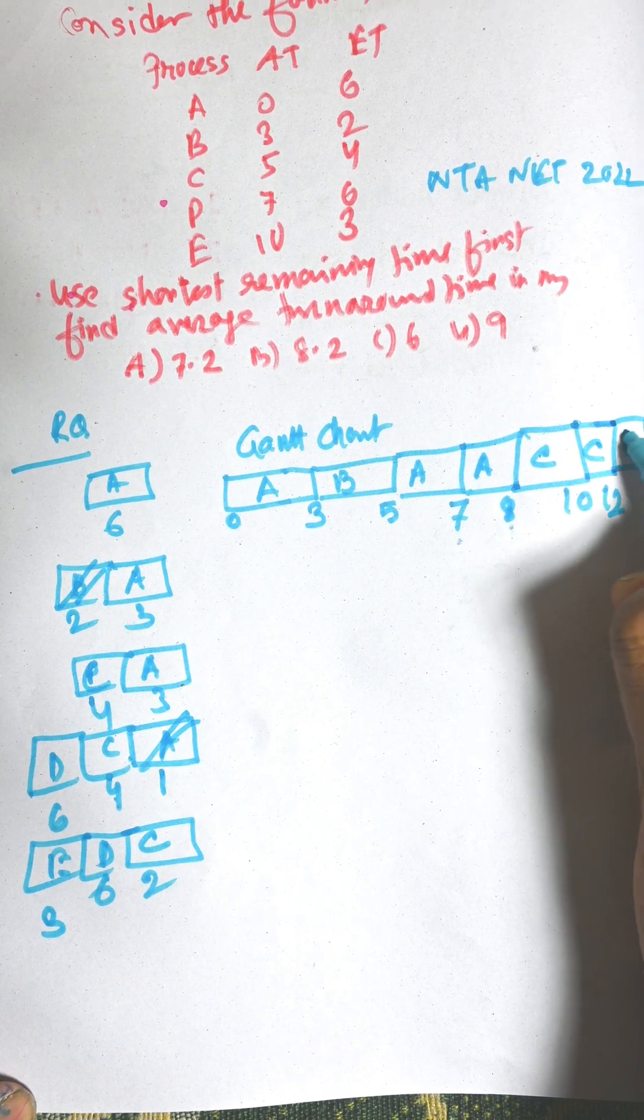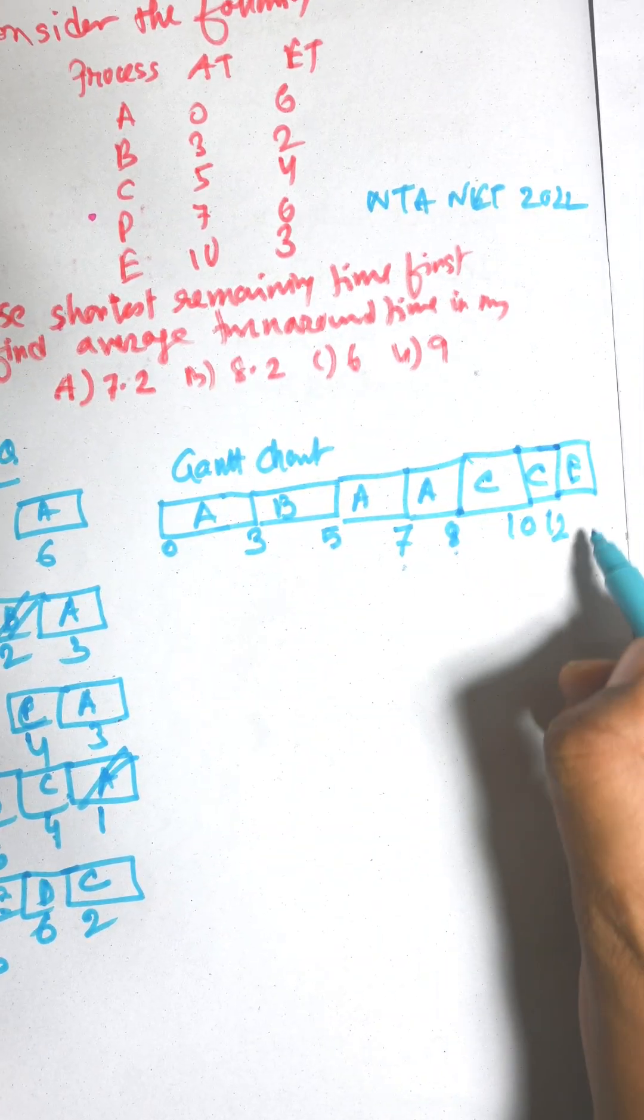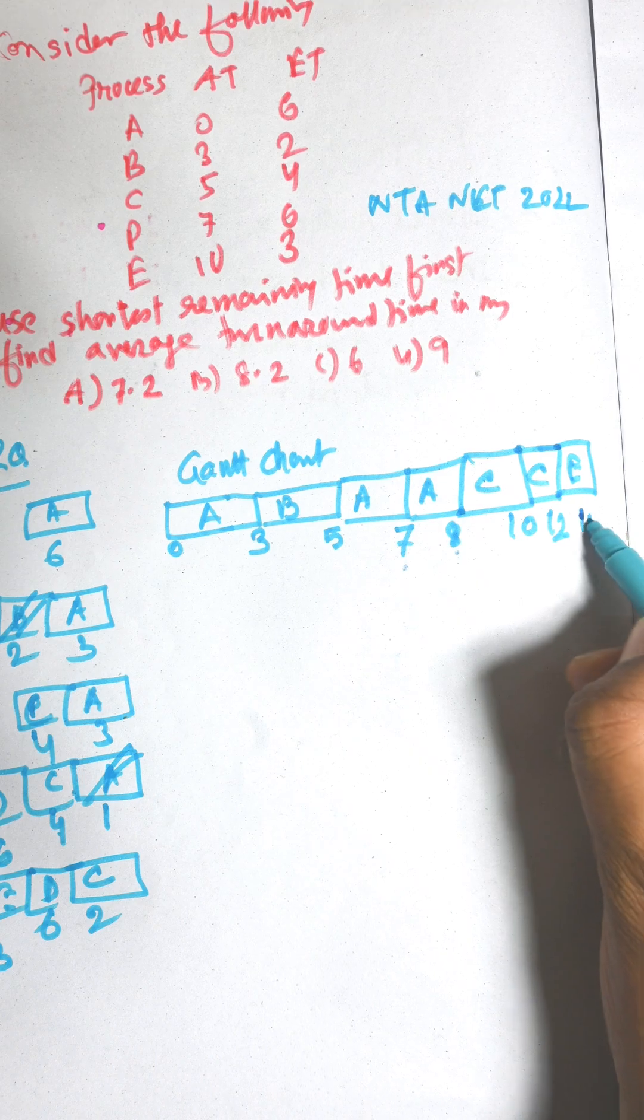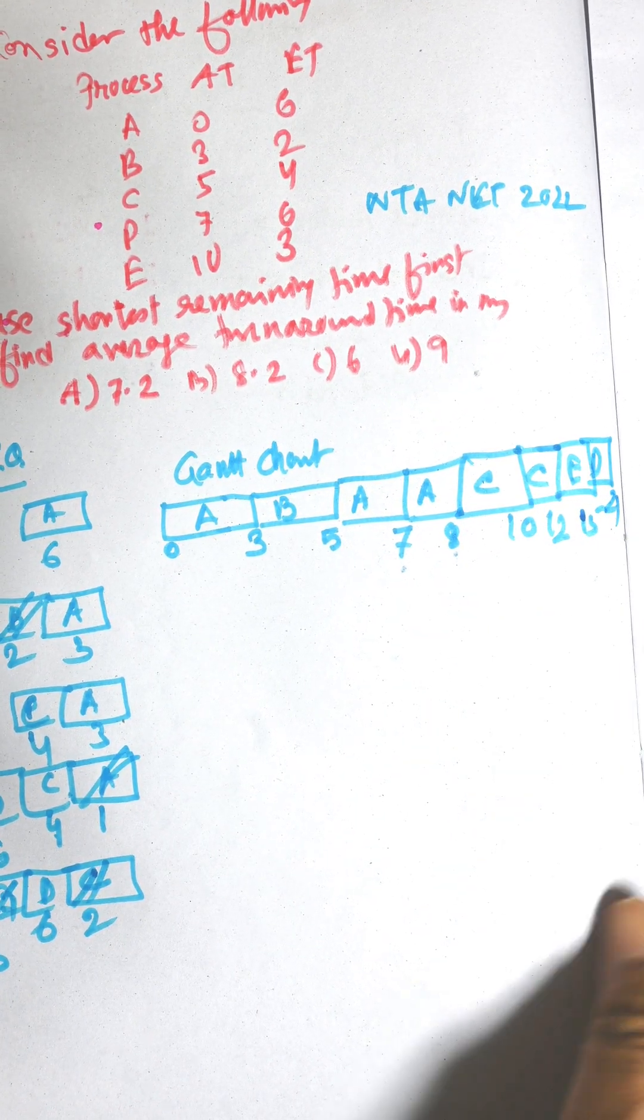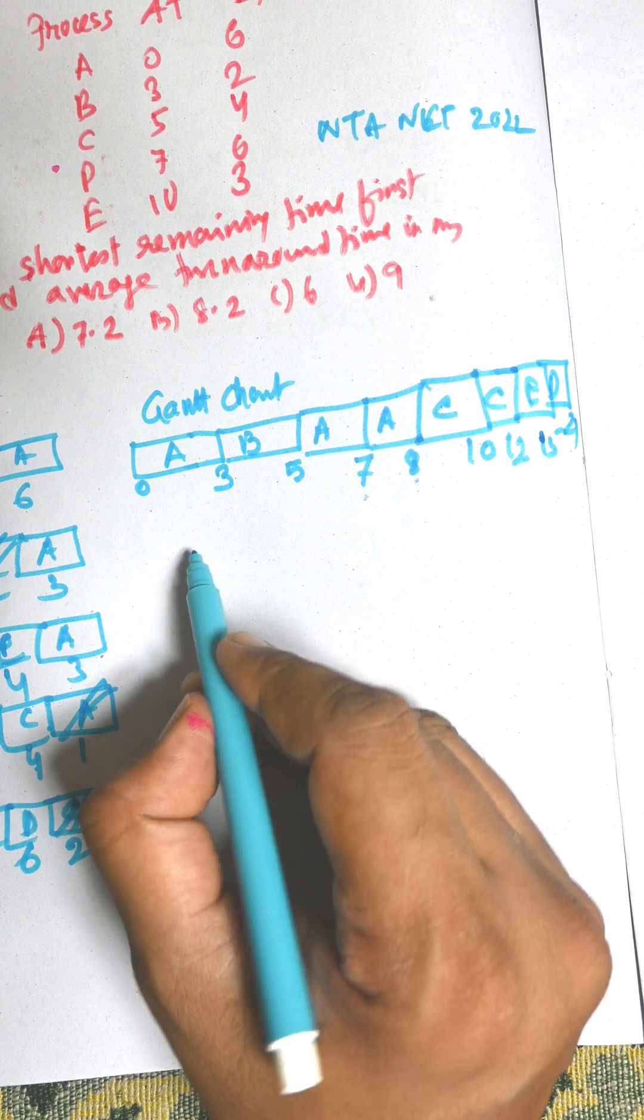Then among D and E, E will execute up to 15. And finally, D will finish its execution at 21. Now, we need to calculate turnaround time.